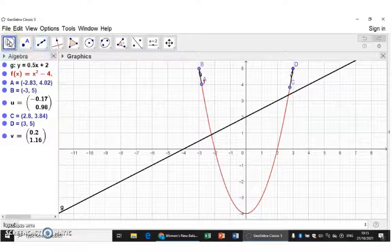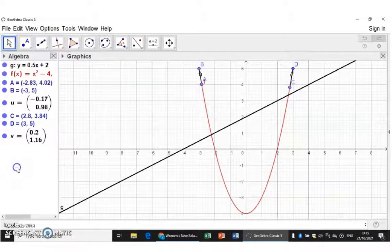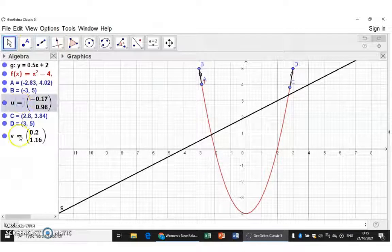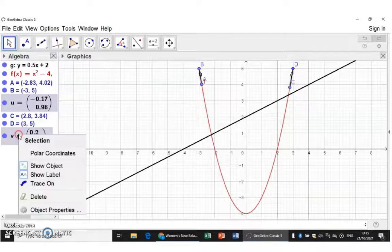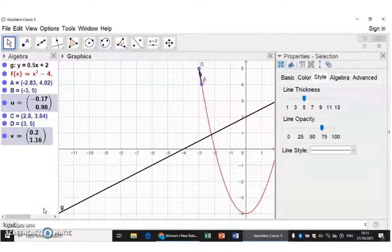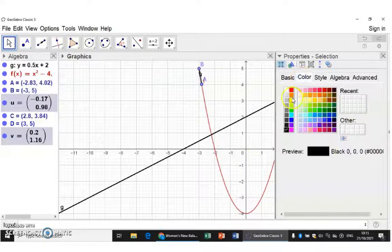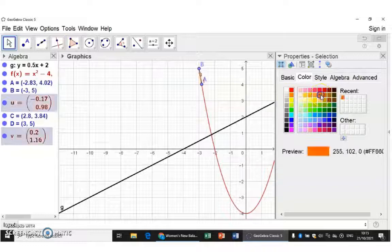I'm going to choose my moving or selecting icon. Now I'm going to select my two vectors and go to their properties. Firstly, I'm going to change the color so that it is the same. It looks like orange.